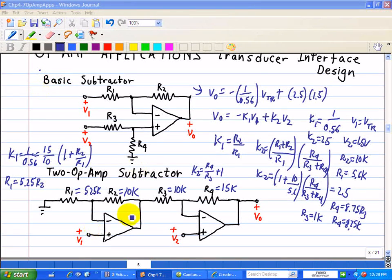So in essence what we have here is two non-inverting amplifiers. Now let's take a look at this first case. We're going to implement this equation here, the second term of 2.5.